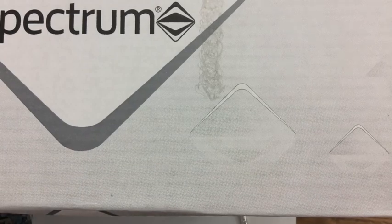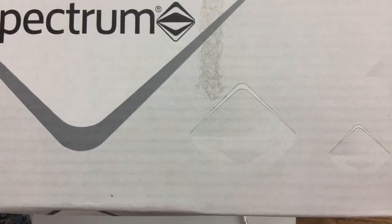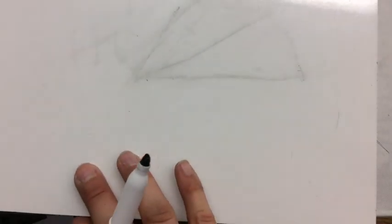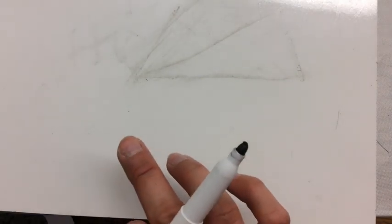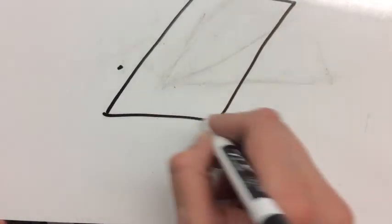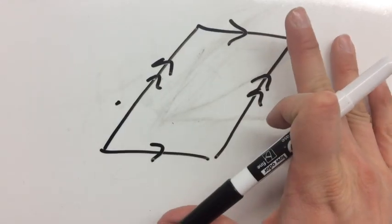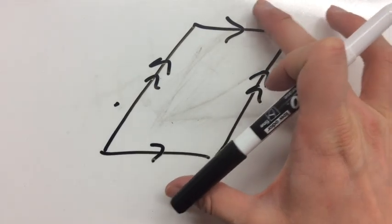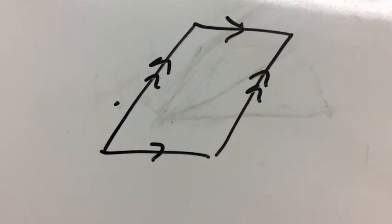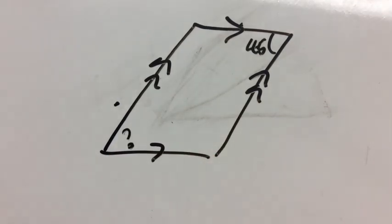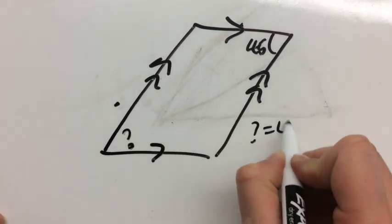For example, if we have a parallelogram and we know it's a parallelogram because these are parallel and these are parallel — the definition of a parallelogram — and this angle here is 45 degrees, and we want to find the opposite angle, then we know that angle is just 45 degrees.